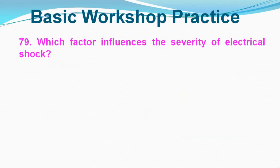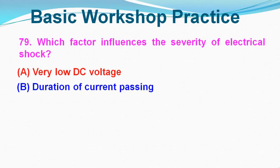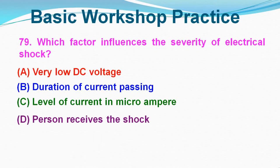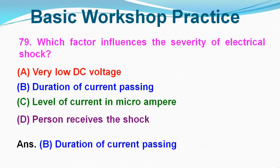Question No. 79: Which factor influences the severity of electrical shock? Option A: Very low DC voltage, Option B: Duration of current passing, Option C: Level of current in micro ampere, Option D: Person receiving the shock. Correct answer is Option B, Duration of current passing.